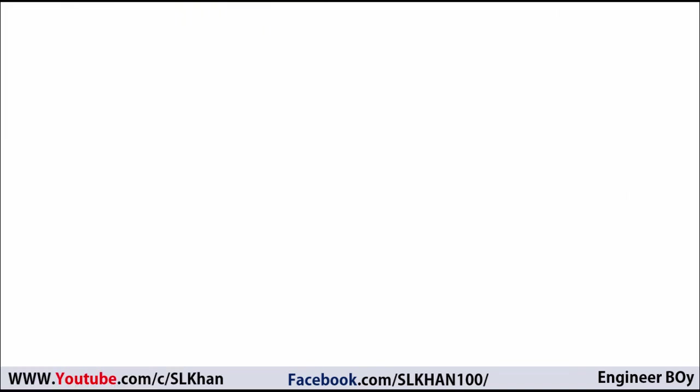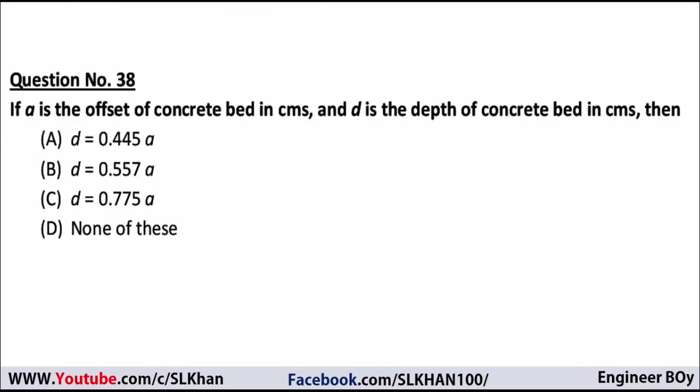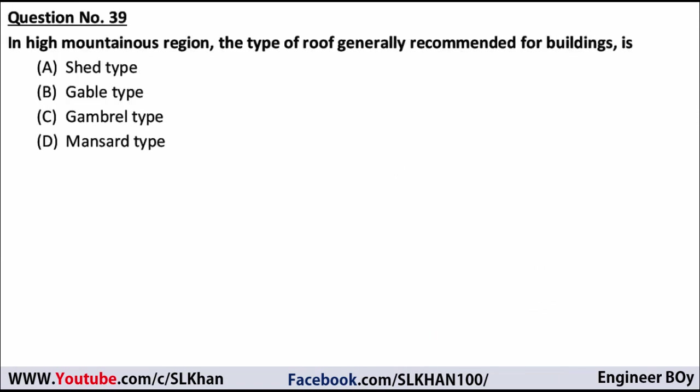Question 38: if A is the offset of the concrete bed in centimeters and D is the depth of the concrete bed in centimeters, then the correct option is C — D equals 0.775A. When you have the offset, you can calculate the depth of the concrete bed using this formula.